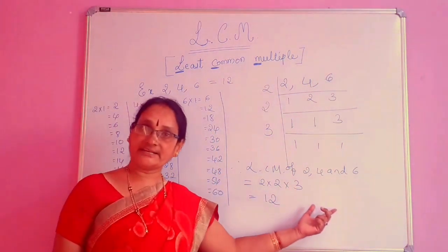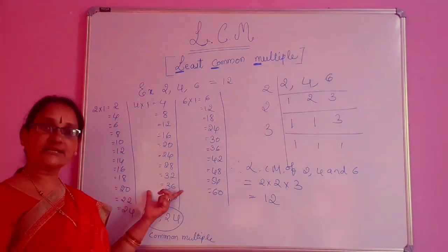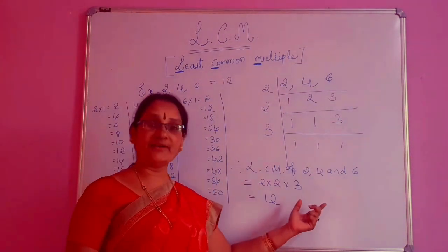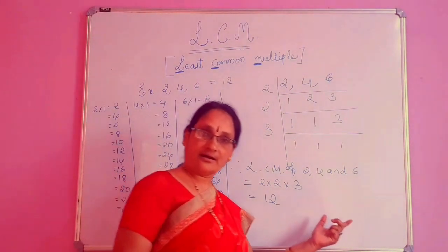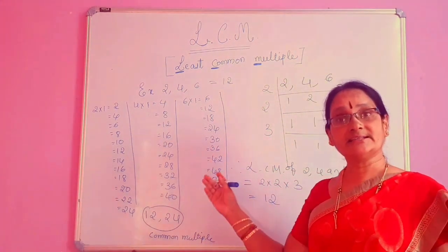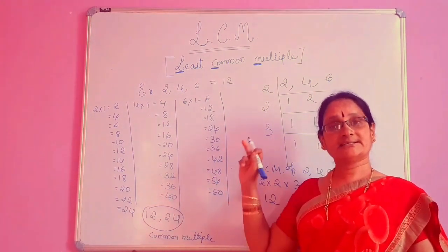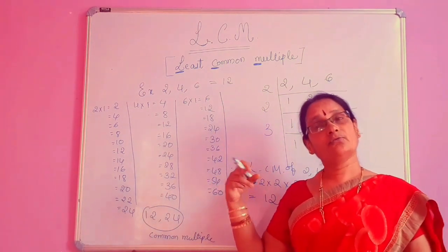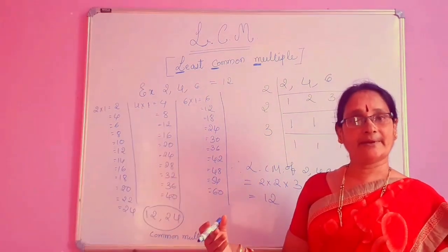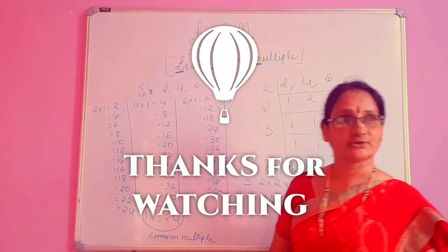You can see the methods are different but the LCM is same. This is listing of the multiples method. This is prime factorization method. My dear students, I hope that you understood finding the LCM of 2 numbers and 3 numbers. The same thing will be followed for 4 and 5 numbers also. Let me come and meet you in the next class with HCF. Thank you.